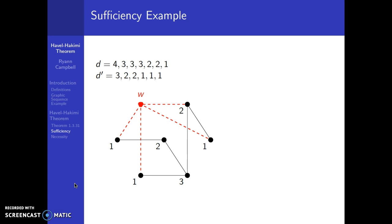And since d1 is 4, w has to be adjacent to 4 vertices as we add it in. So that adds in w and all of the edges that you can see that are red dashed lines. And as we add those in, we end up with the graph on the right, which has the degree sequence 4, 3, 3, 3, 2, 2, 1, which is what we wanted to begin with.